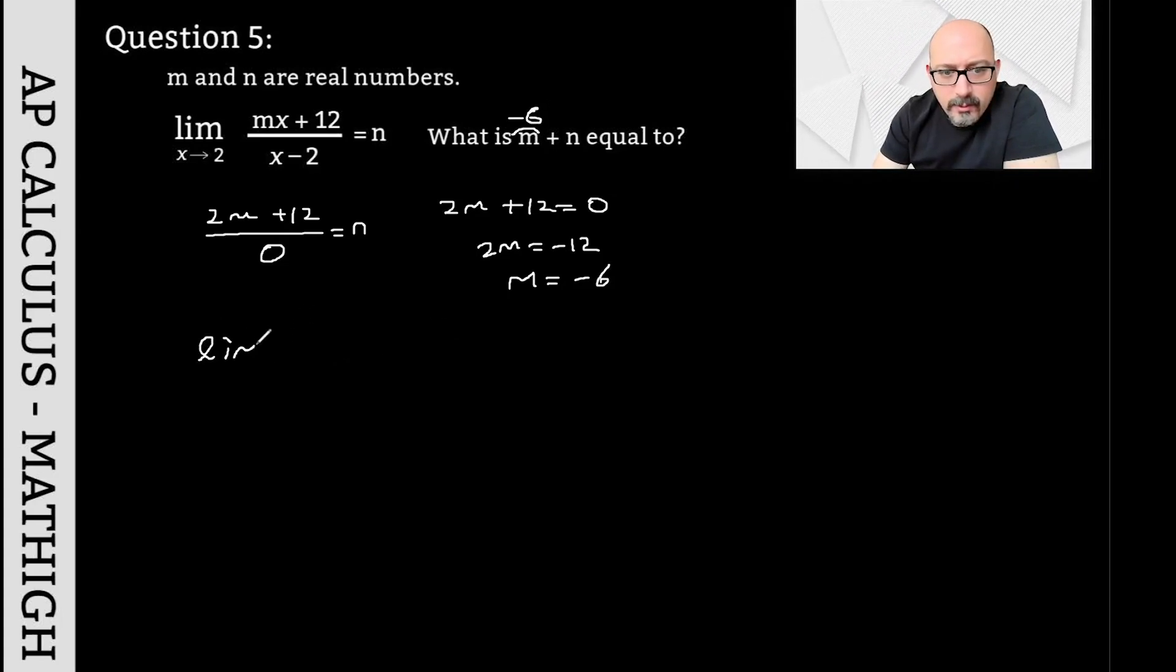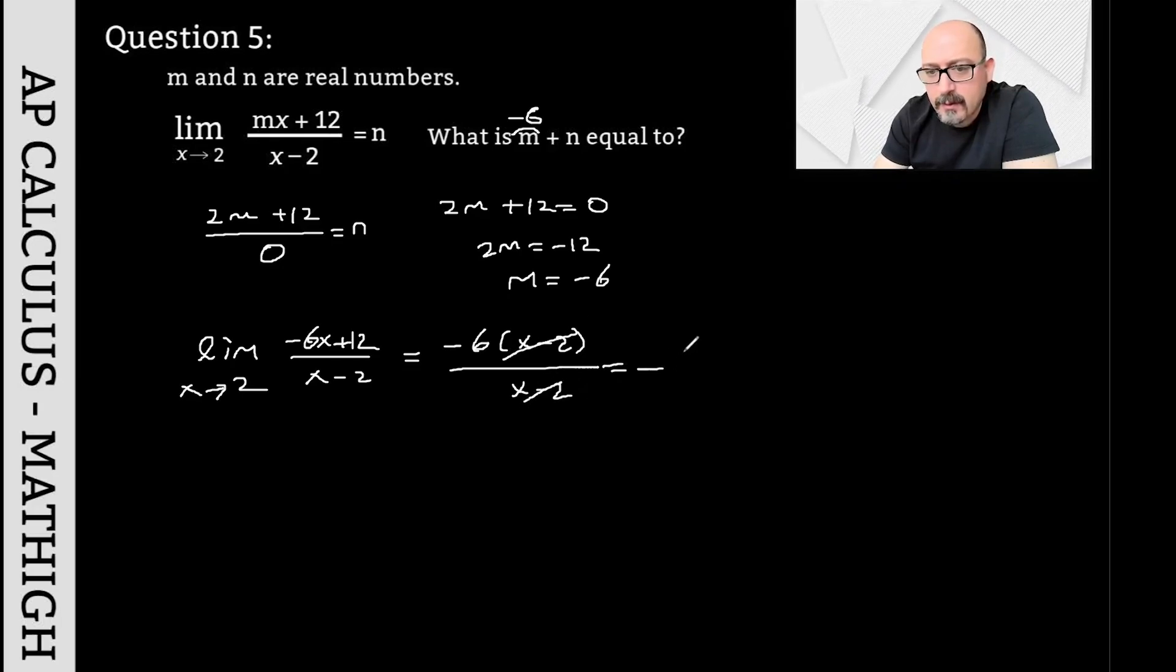Let's rewrite the question by substituting this in. As x approaches 2, it became negative 6x plus 12 divided by x minus 2. I factored out negative 6 from the top: negative 6(x-2). And below, there's x minus 2. I simplified it. From here, I found the limit to be negative 6. The question told us that the limit is equal to n, so the value of n is negative 6. In this case, the answer to the question would be negative 12.